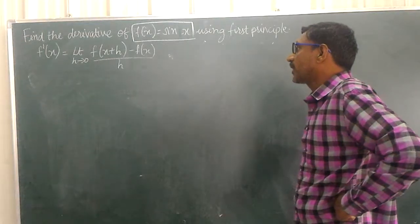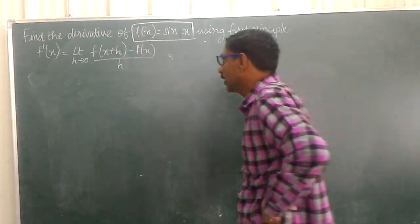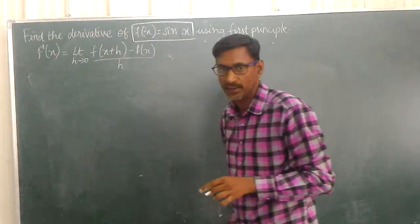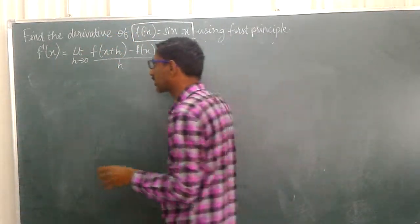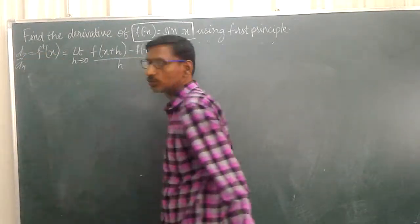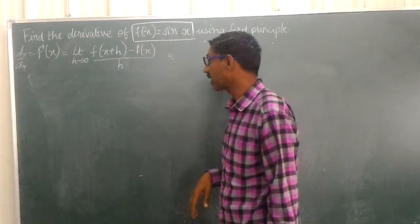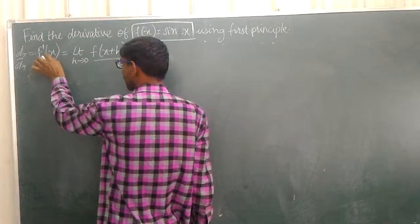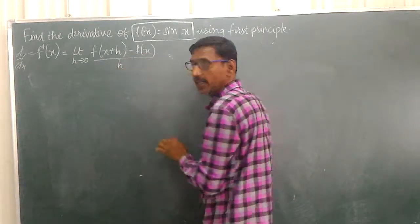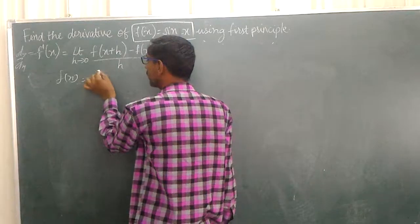Find the derivative of f(x) = sin(x) using first principles. f'(x) is equal to the limit as h tends to 0 of [f(x+h) - f(x)] / h. So f(x) = sin(x).